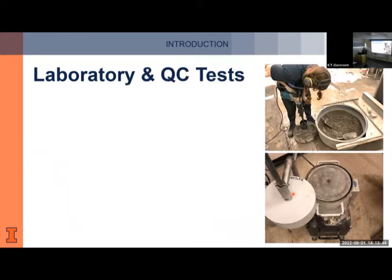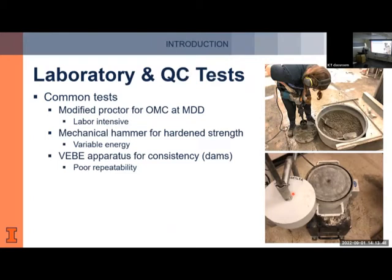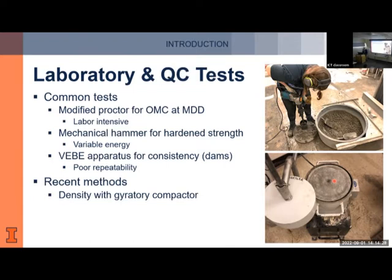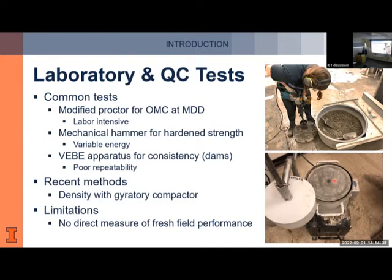Regarding current laboratory tests, we have the modified Proctor test used for soils — very labor-intensive. There is a mechanical hammer standard for RCC, ASTM C1435, which is a demolition hammer used to compact the sample with variable energy. There is also a Vebe apparatus used mainly for RCC dams. Recent methods include density measurement with a gyratory compactor; however, it only measures density and doesn't evaluate compactability or performance. A key limitation is there is no direct measure of fresh field performance — a Proctor value of 2437, for example, doesn't tell you if the mixture is good or not.